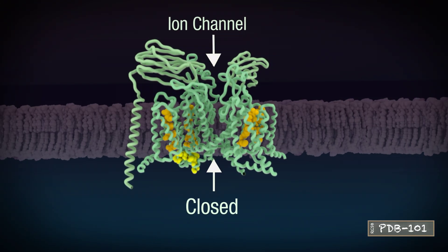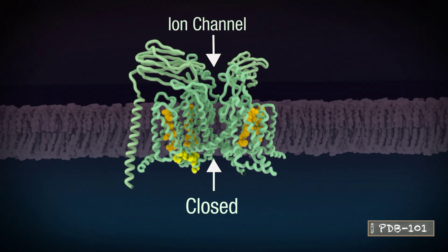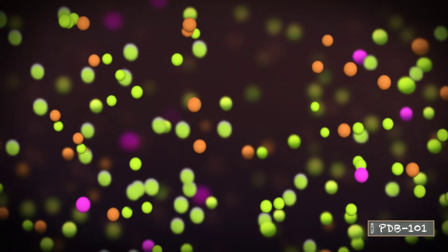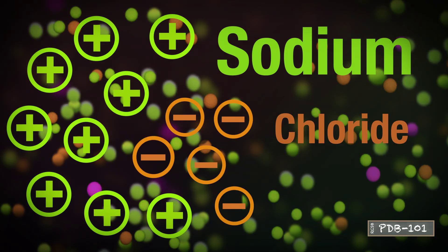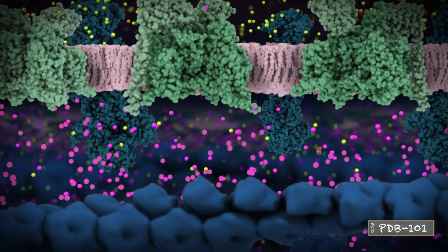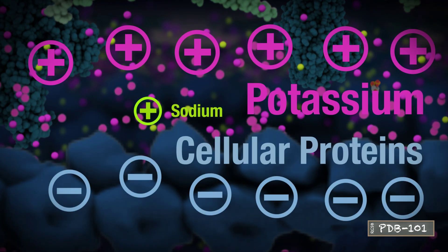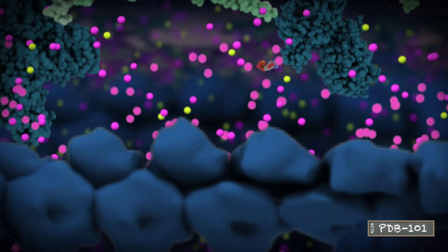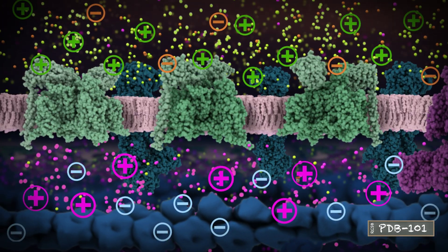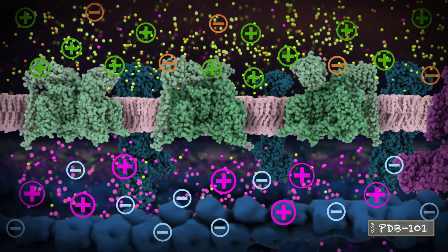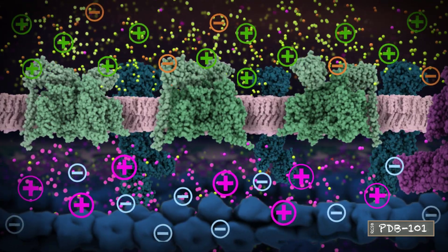When a neuron is at rest, its ion channels are closed, and the overall concentrations of ions and proteins create a higher potential on the outside and a lower potential on the inside. This state is referred to as resting potential, and the membrane is said to be polarized.